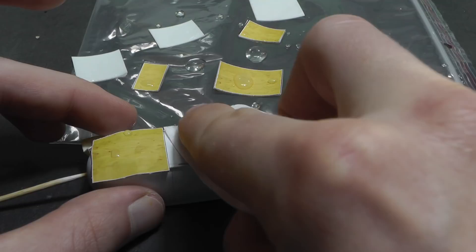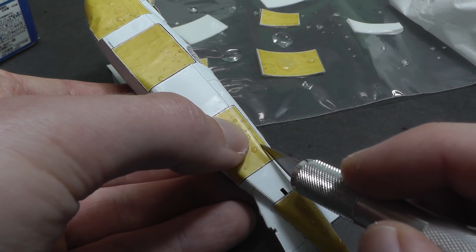Now I clean excess decal setter and water with a paper towel. As I said, I must cut the decals to a precise shape. You must use a very sharp blade, because cuts must be very clean and straight. Now I set the decals properly with a decal setter and let it dry for a few hours. Four should be enough.